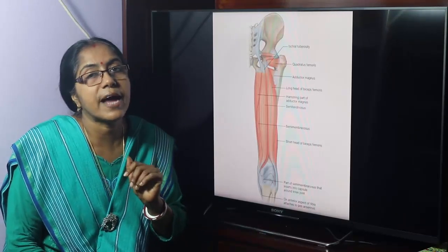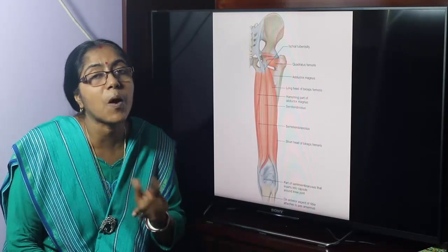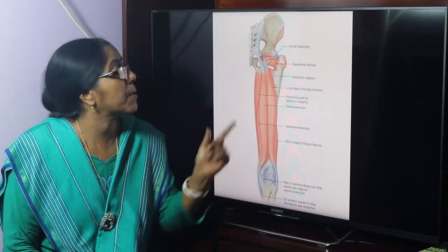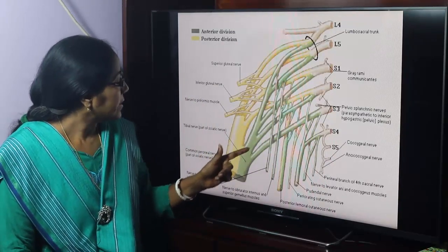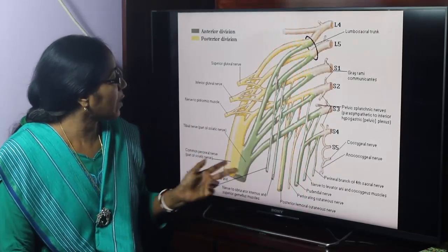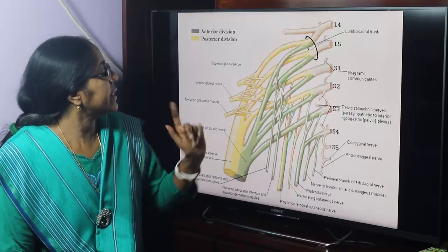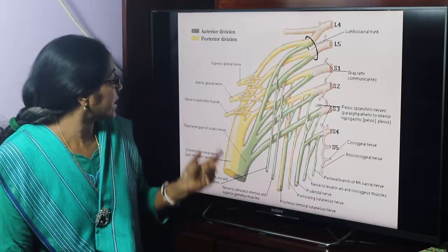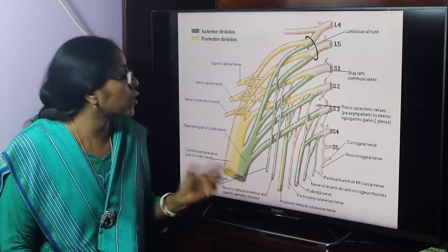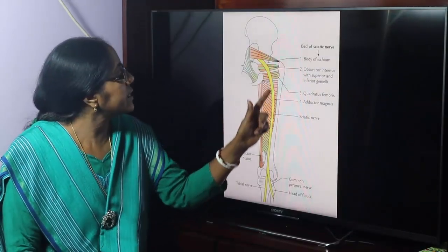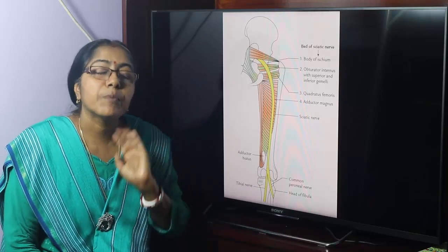The tibial part of the sciatic nerve supplies the posterior compartment. The sacral plexus gives rise to the sciatic nerve, which has two components: the tibial component and the common peroneal component. The root value is L4, L5, S1, S2, and S3. The anterior division forms the tibial component and the posterior division forms the common peroneal component.